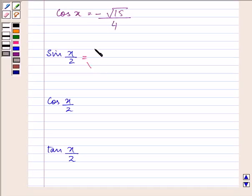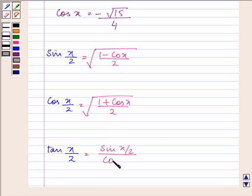I hope you remember the formulas: for sin x/2 it will be √((1 - cos x)/2), for cos x/2 it would be √((1 + cos x)/2), and for tan x/2 we use the formula sin x/2 divided by cos x/2. So that means we need to find these two values first.